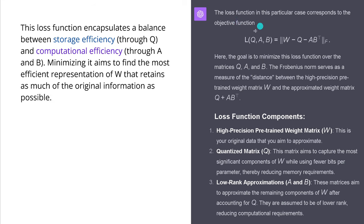Now, if you want to find out about the loss function in this particular case, this is what GPT-4 tells you here in a very easy example. It gives you here also exactly tells you what this is. W, the high precision pre-trained weight matrix, our quantized matrix and our low-rank approximation, our matrices A and B. And the loss function encapsulates a balance between the storage efficiency through the quantization and our computational efficiency through our LoRa. Minimizing it aims to find the most efficient presentation of W that retains as much of the original information W as possible.